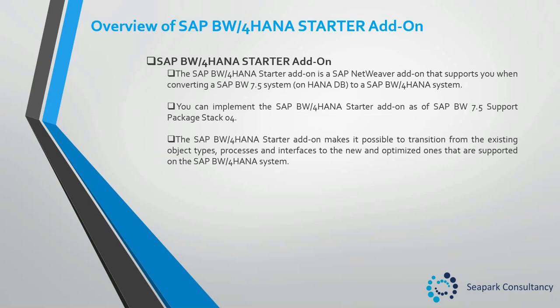Overview of SAP BW4HANA starter add-on. The starter add-on is a SAP NetWeaver add-on that supports you when converting a SAP BW7.5 system on a HANA database to a BW4HANA system. You can implement the SAP BW4HANA starter add-on as of BW7.5 support package 4. The BW4HANA starter add-on makes it possible to transition from the existing object types, processes, and interfaces to the new optimized ones that are supported on the BW4HANA system.